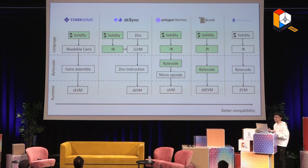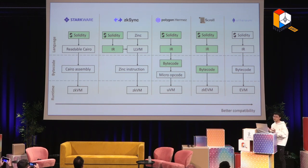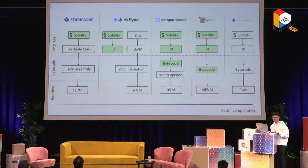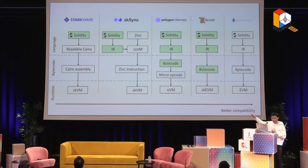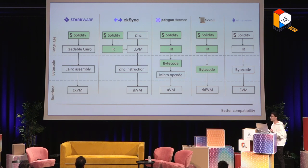Here is a more explicit comparison between different projects. For StarkWare, if you are developing a smart contract on StarkNet, you need to write in their domain-specific language called Cairo. There is an external team that can build a compiler called Warp, which compiles Solidity into readable Cairo. Then it compiles down to Cairo assembly, which is a small subset of assembly code, and runs on their ZK VM.